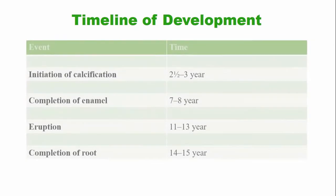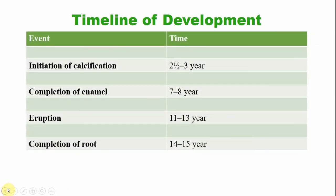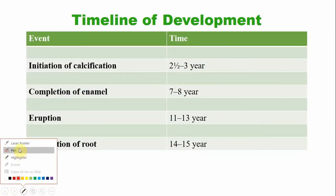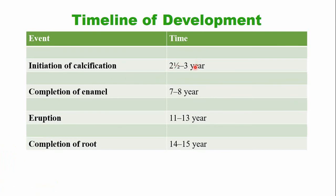The calcification of the mandibular second molar begins at the age of two and a half to three years. The crown is completed by the age of seven to eight years. The tooth emerges into the oral cavity by the age of 11 to 13 years. The completion of the root is around the age of 14 to 15 years.